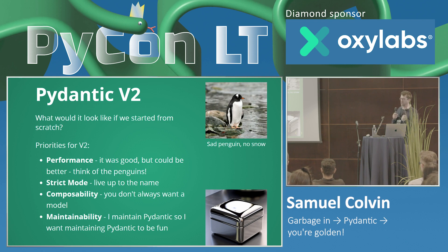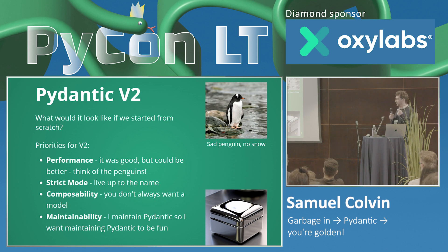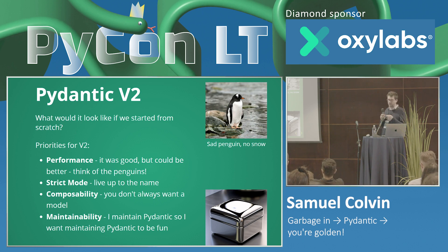Secondly, strict mode. Pydantic defaults to coercing things, which is often useful, but there are contexts in which that's definitely a pain. Composability: in Pydantic V1, everything effectively was or extended from a BaseModel, which had limitations, performance impacts, and some gremlins when using it. We wanted to be able to build validators without a BaseModel at the root of everything. And maintainability most of all — I spend my life maintaining Pydantic, and I want that process to be fun.